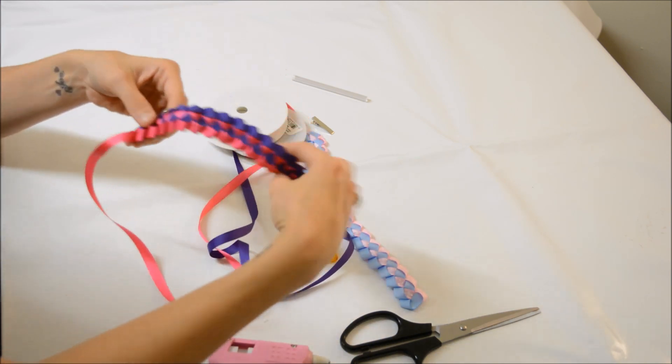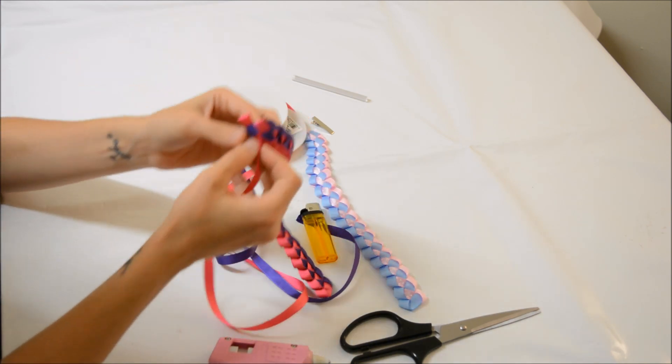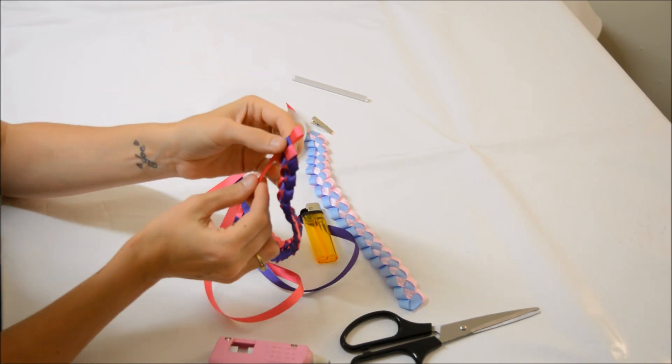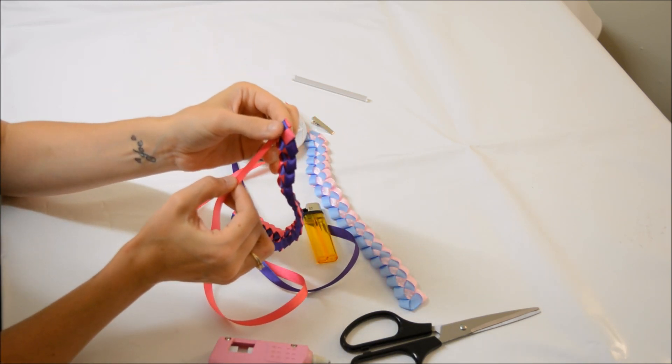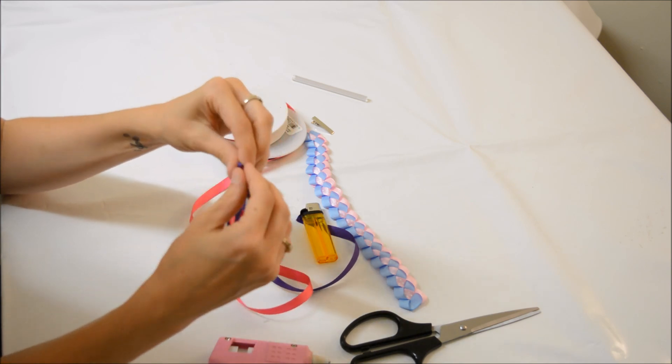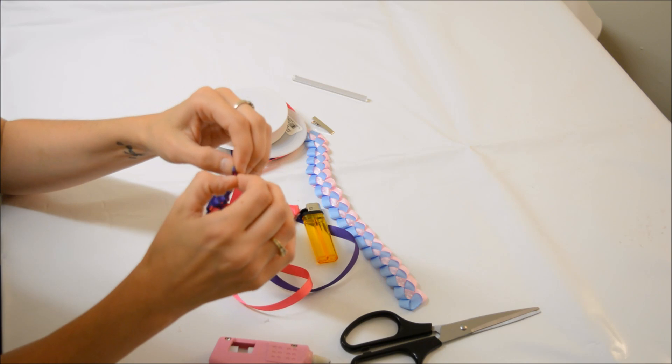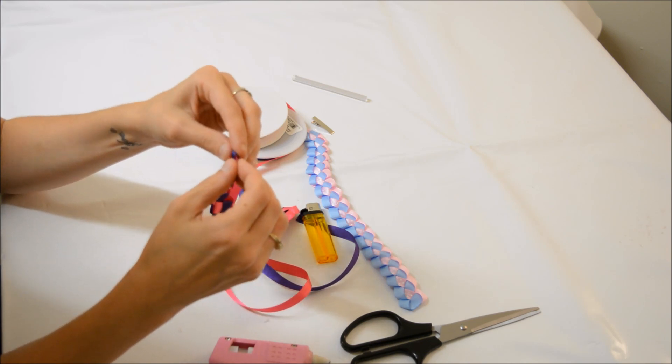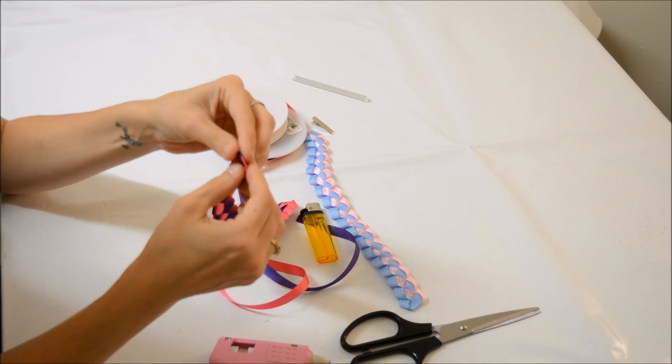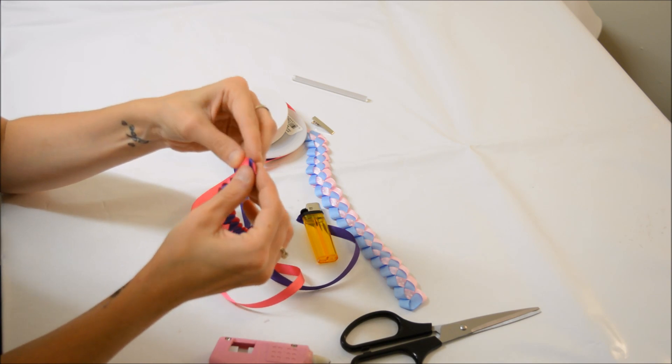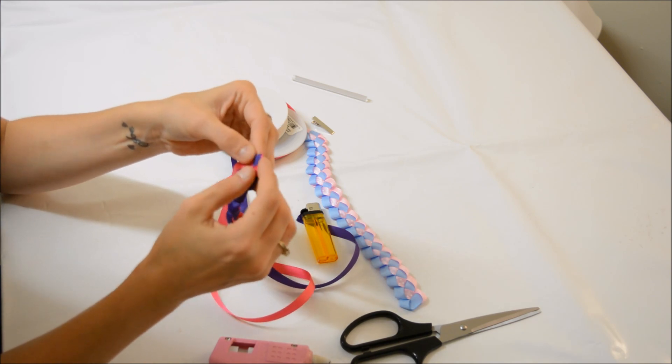Now you want to take this and when you have this loop coming through, you want to pull that down so it's just poking out at the end. Only slightly. You can barely see that at the end.